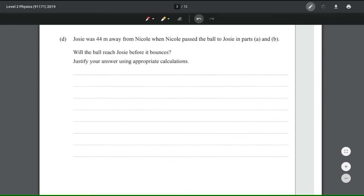Josie was 44 metres away from Nicole when Nicole passed the ball to Josie in parts A and B. Will the ball reach Josie before it bounces? Justify your answer using appropriate calculations. So, this is pretty much a long-winded way of getting us to figure out the horizontal distance. And to do that, I'm first going to find the time by looking at the vertical motion. Knowing the time, I can then use the horizontal velocity to find the distance using velocity equals distance over time.